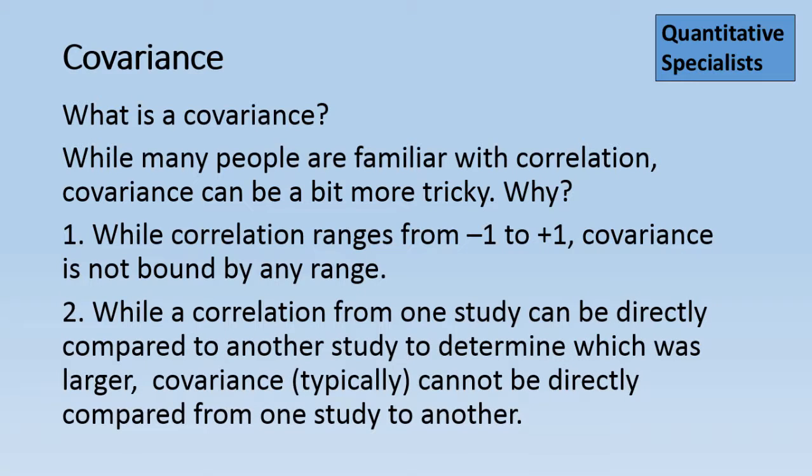And while a correlation from one study can be directly compared to another study to determine or assess which was larger, covariance typically cannot be directly compared from one study to another. So that makes it harder to get a handle on it as well.